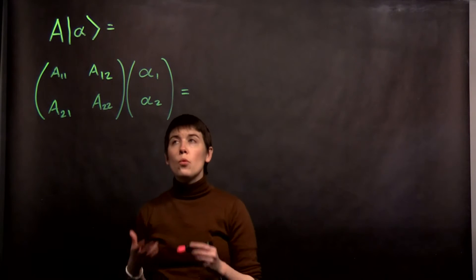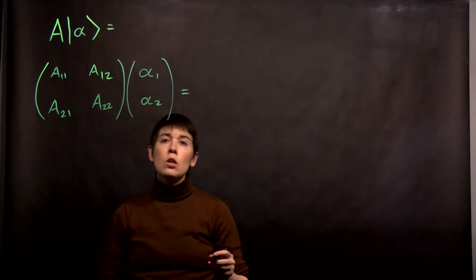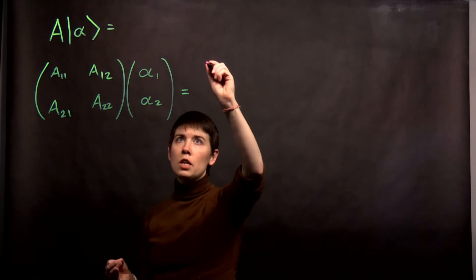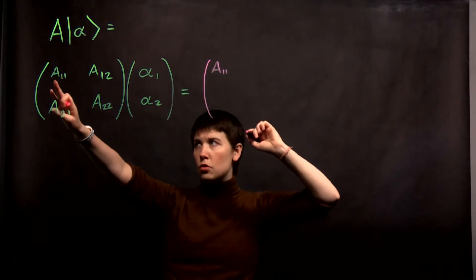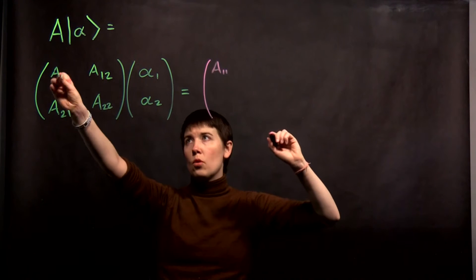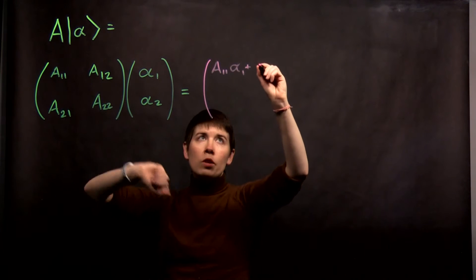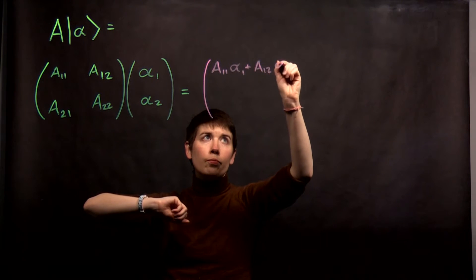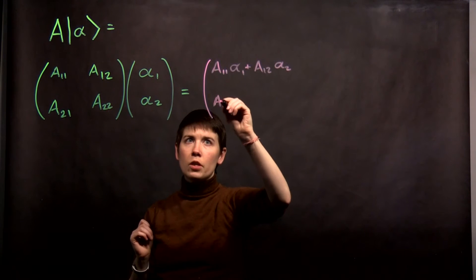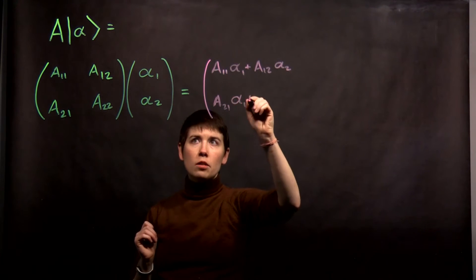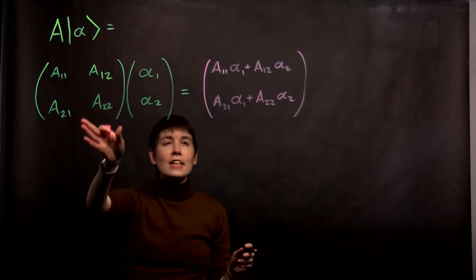When we do out this math, we can see what we get. We're going to have a row times a column, then a row times a column, so this is going to look like another column vector. To write it out concretely: the first entry is A11 multiplied by alpha 1, plus A12 multiplied by alpha 2. The second entry is A21 multiplied by alpha 1, plus A22 multiplied by alpha 2.